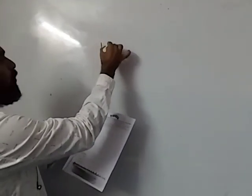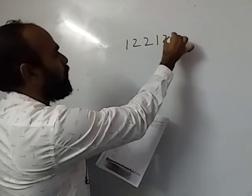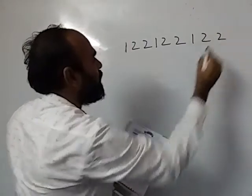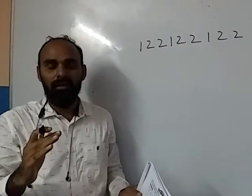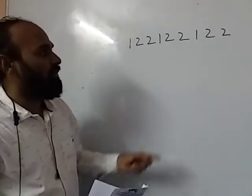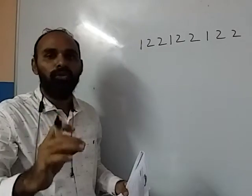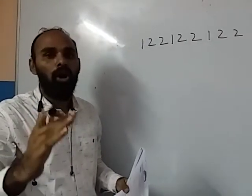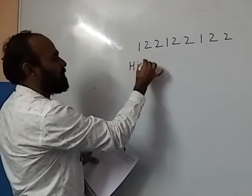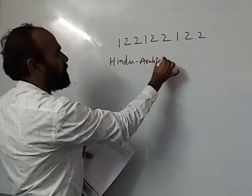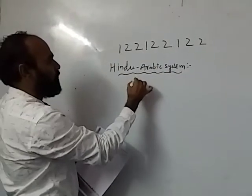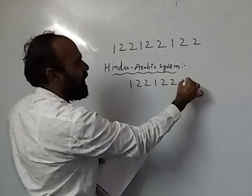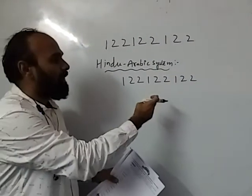First question: the number given is 1, 2, 2, 1, 2, 2, 1, 2, 2 — that is the number 122,122,122. We should write this number in both the Hindu-Arabic System and the International System. We need to follow one rule: first, we should divide the number by using commas.